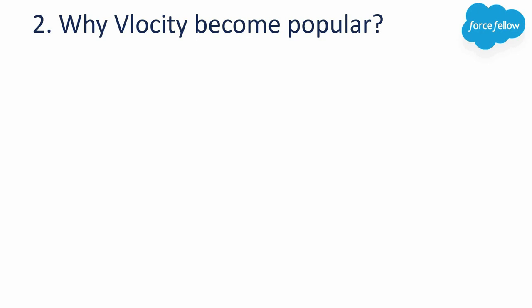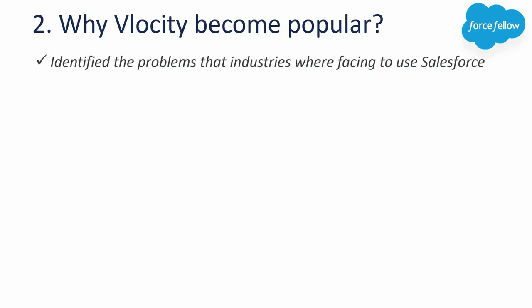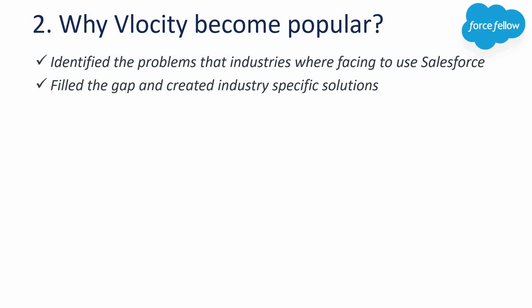The next question is: why did Velocity become popular? As we discussed, Velocity identified the problems that industries were facing when using Salesforce, worked to fill the gap, and created industry-specific solutions. Industries can now easily use Salesforce with a Velocity package without having to do much customization. This is the main reason Velocity became more popular in a very short time span.